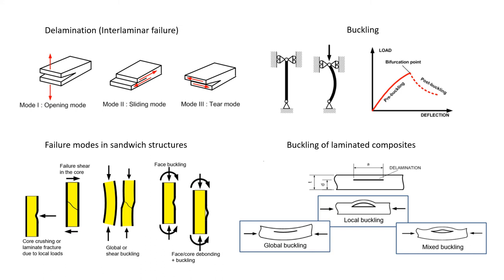The failure modes in sandwich structures show typical damage modes in addition to damage in composite skins. These occur by core crushing or laminate fracture due to local loads. Delaminated composite structures can have failure modes depending on the thickness of the laminate and the size and depth of the delamination. Buckling load is reduced in the presence of delamination. Here, local buckling, global buckling and mixed buckling are shown.